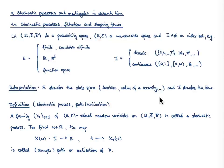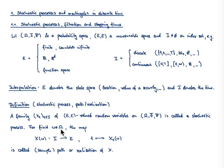Here comes the definition of what we should understand by a stochastic process and a path or realization. A stochastic process is nothing else but a family — indexed by the set I — of random variables with values in the state space E, defined on our probability space. And in case we fix an ω in Ω, we call the map X(ω), which takes t from I and maps it to X_t(ω), a realization or sample path of our stochastic process.